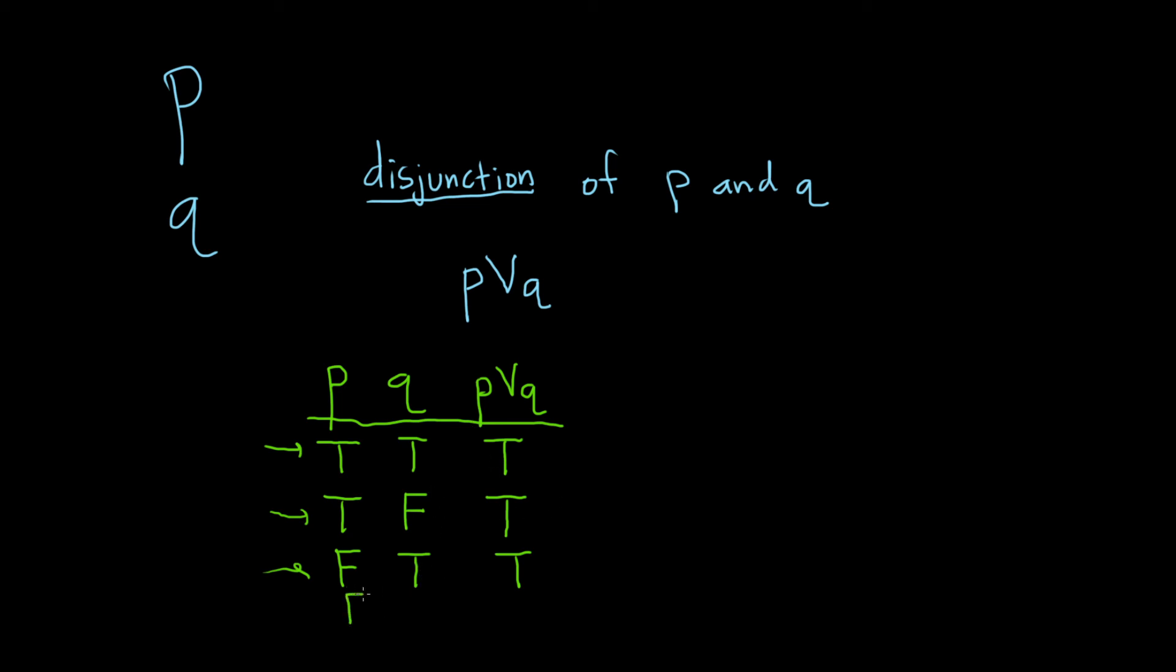And the last case is when they're both false. And this is the only case that the disjunction will be false. In this case, p or q is false. Let me go ahead and draw my little lines here to make it look like a better truth table.